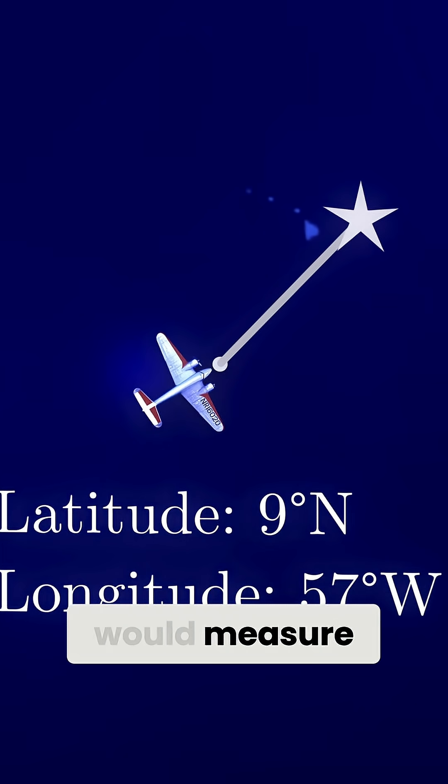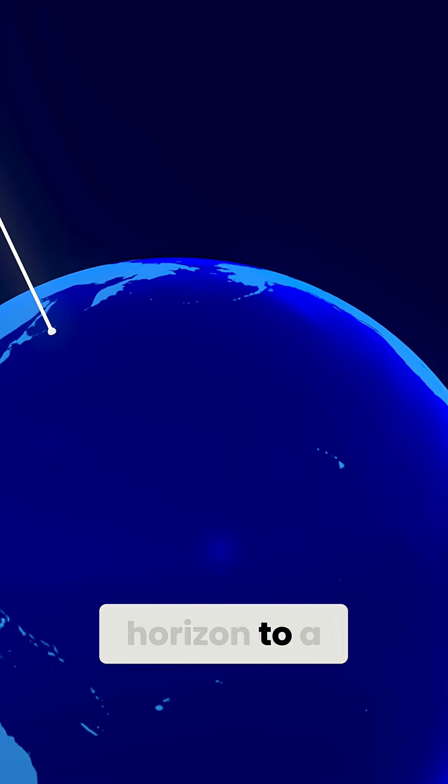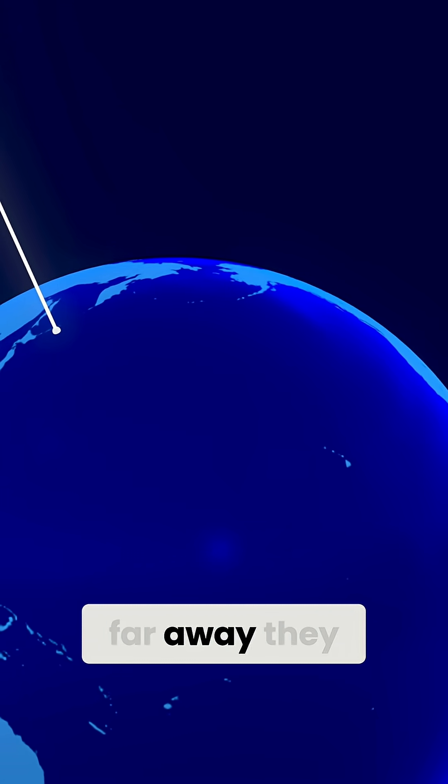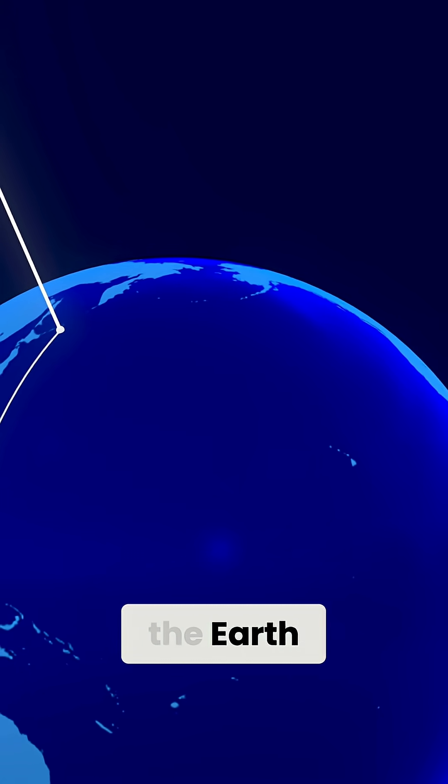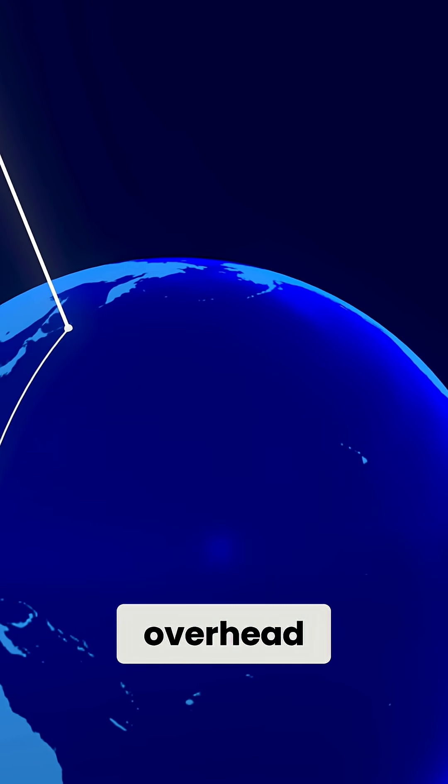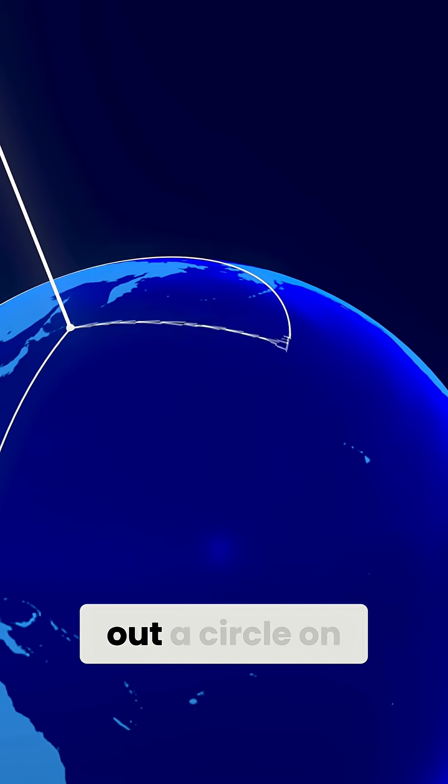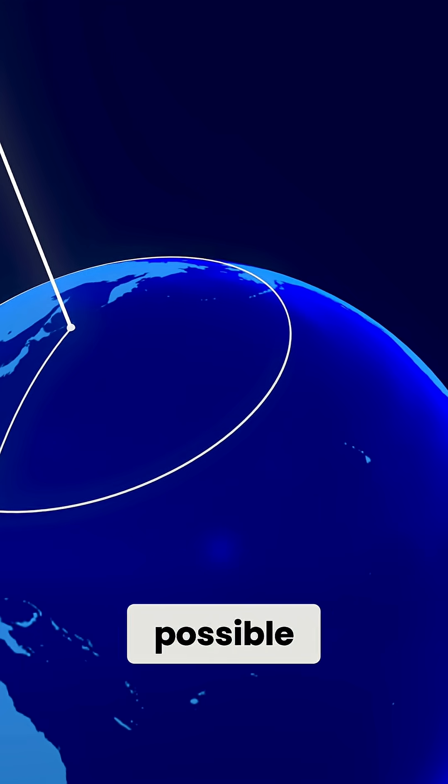So Noonan would measure the angle above the horizon to a navigation star and use that to work out how far away they were from the point on Earth where that star would be directly overhead. So he could trace out a circle on the globe of possible locations.